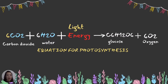Here is the equation for photosynthesis: six carbon dioxide plus six water, plus light energy from sunlight, produces glucose — C6H12O6 — and six oxygen as the waste product. This is the chemical equation for photosynthesis in plants.